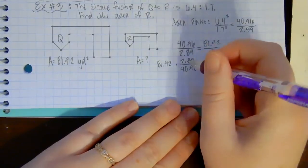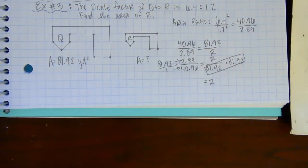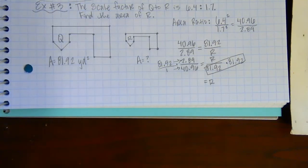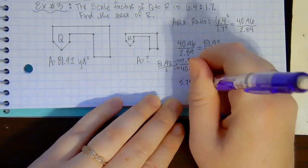And then over here, again, I can put over one and just multiply straight across. So I would go 81.92 times 2.89 and then divide it by 40.96, and I get 5.78.